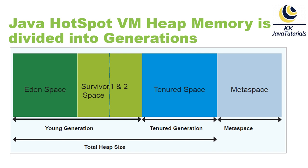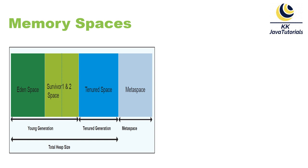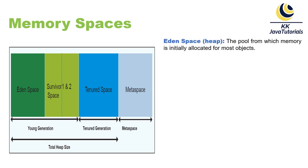Java HotSpot memory is divided into different categories, and you can tune it by setting certain size attributes, which we'll discuss separately. That's the high-level introduction about the Java HotSpot memory model. Now let's talk about each concept in a little more detail.